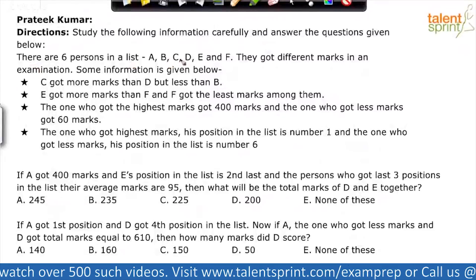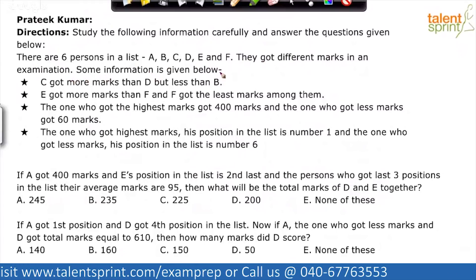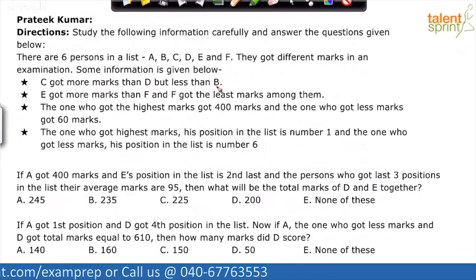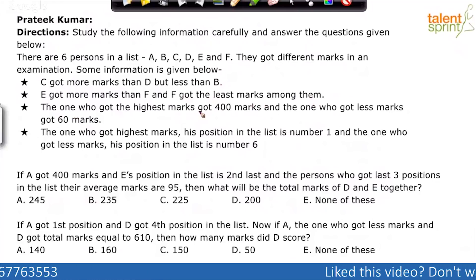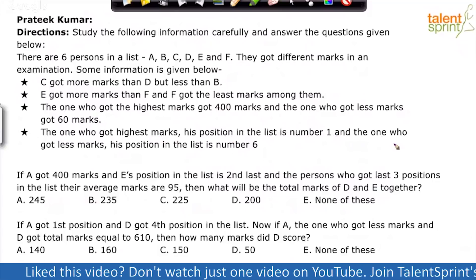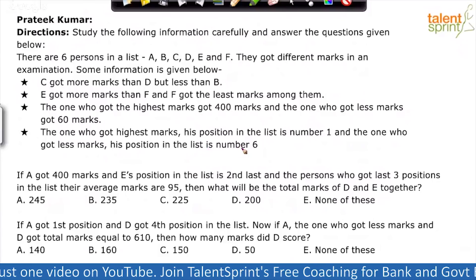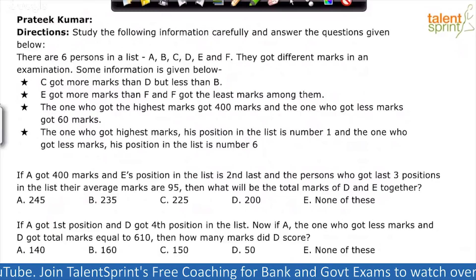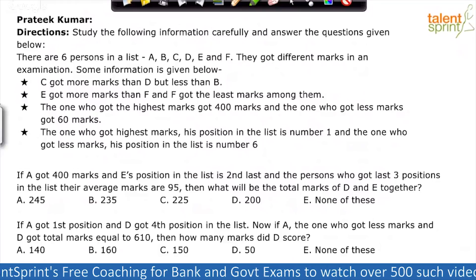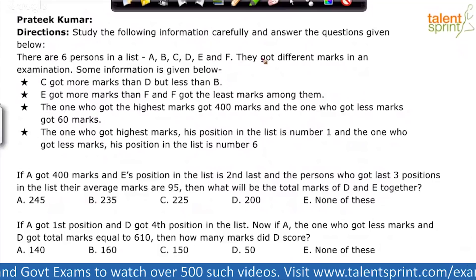There are six persons in a list — A, B, C, D, E, and F. They got different marks in an examination. Some information is given below. Based on this data we need to answer two questions. So basically this is an arrangement of six persons in a straight line — a linear arrangement — and they have been arranged based on the marks they have got.